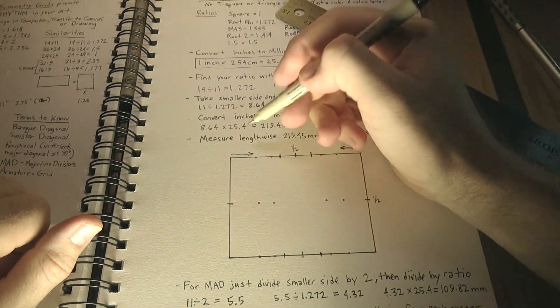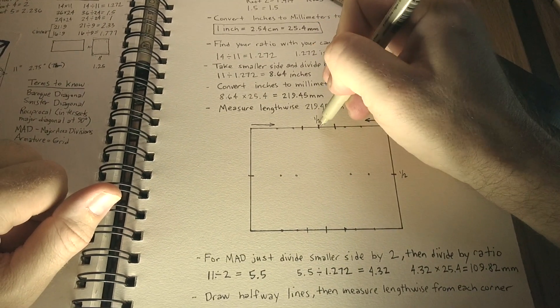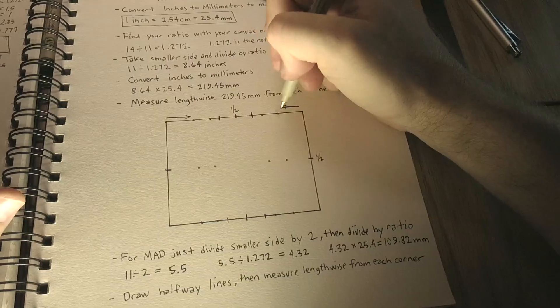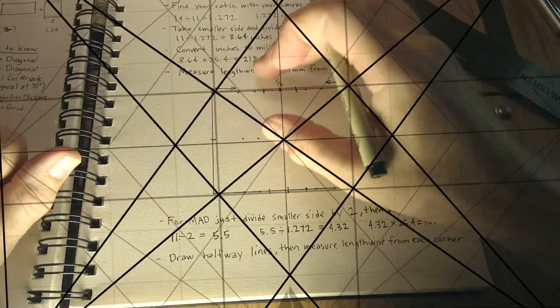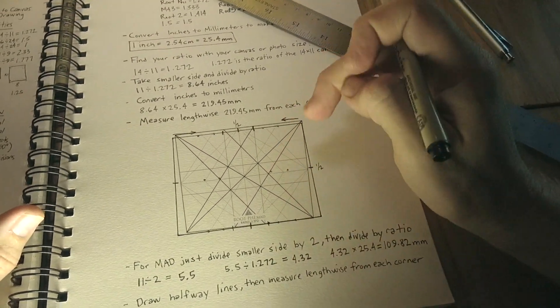We just measure from each corner lengthwise, 109.82 millimeters. So from here to here will give us 109, from here to here, and then we just keep going. So measure each rectangle from each corner and that'll give us the measurements for the major area divisions.